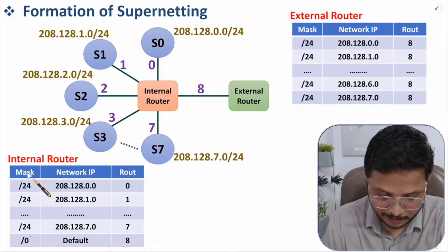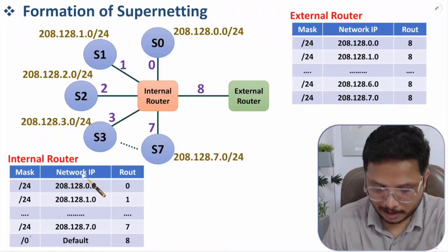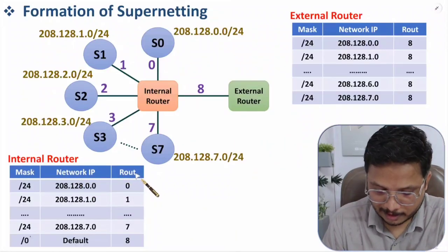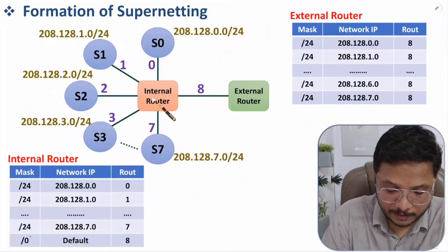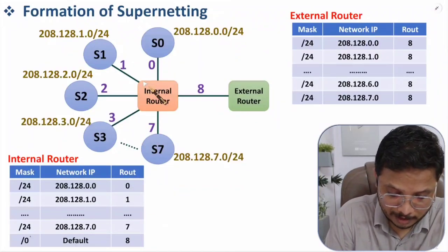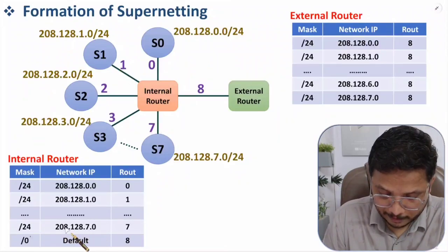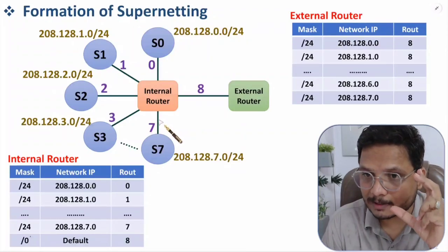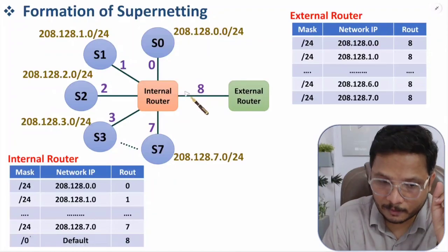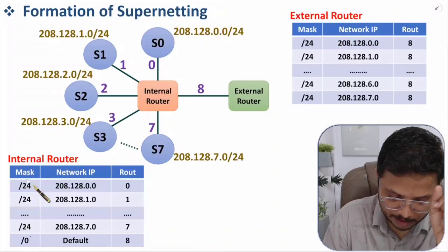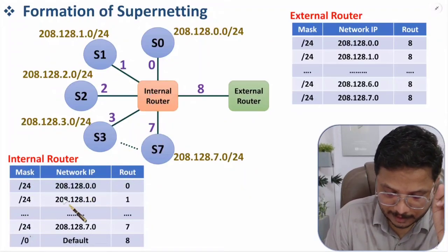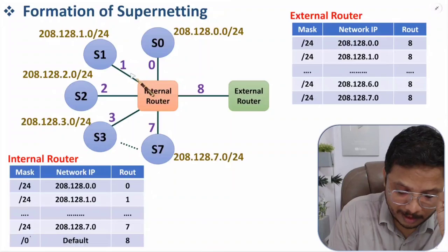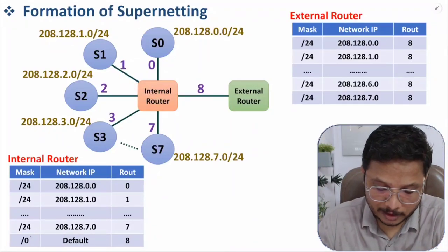The internal router table format has the mask first, then the network IP, and routing is performed based on that network IP. For example, with this network IP, the route goes to interface 0; with another, to interface 1, and so on up to interface 7. The internal router performs a masking operation on incoming frames to identify the network IP, then routes accordingly.